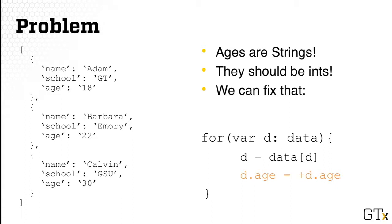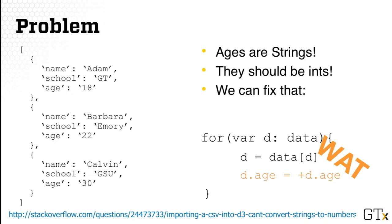The first time you use the .csv function, you may run into something surprising. With a toy dataset of people where one column has age numbers, after loading into JSON internal format you'll notice that age is actually encoded as a string — for example, 18, 22, and 30 are all quoted. The type is not automatically inferred correctly. The low-tech fix is to loop through all the rows and reassign an integer version of the age value to itself using the plus sign, since only numbers can have the plus sign, helping JavaScript infer the correct type.